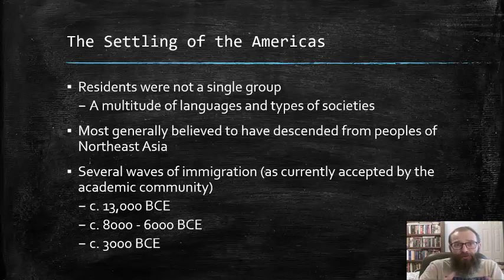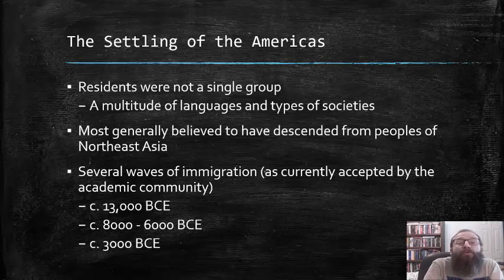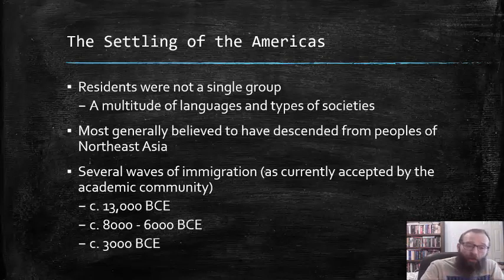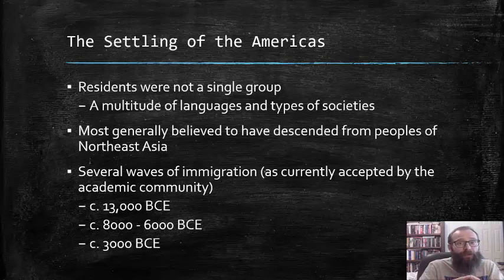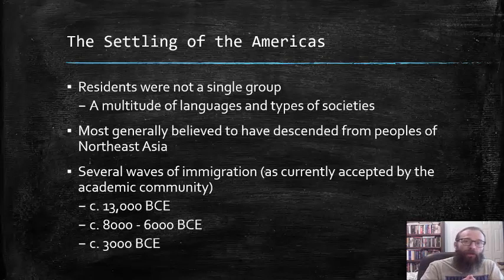It is important to understand that the original inhabitants of the Americas were not a single racial, ethnic, or most importantly, cultural group. They represented a multitude of various languages and types of societies. Most are generally believed to have descended from the peoples of Northeast Asia, and there were several waves of immigration, as is currently accepted by the academic community, although there is some controversy here as new evidence is constantly being discovered. The first wave occurred around 13,000 BCE.